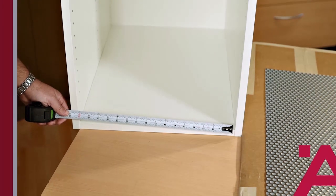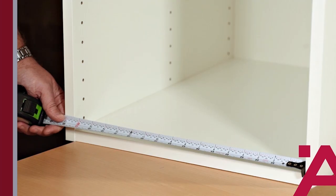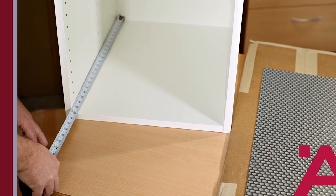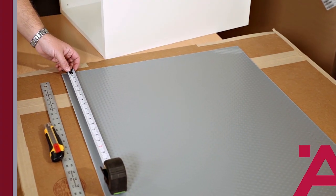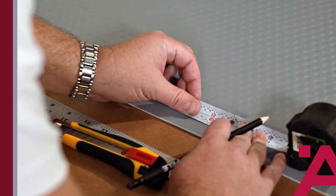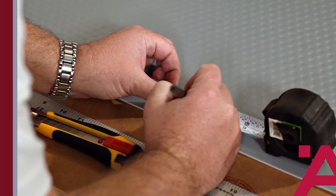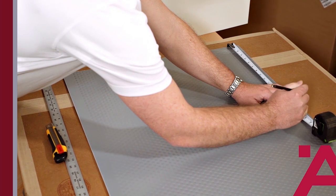To install the protective mat, the first thing we'll do is measure the width and the depth of our cabinet. Then we'll transfer those dimensions to the backside of the mat, marking with a pencil. Note that the front edge of the mat is the undimpled portion.